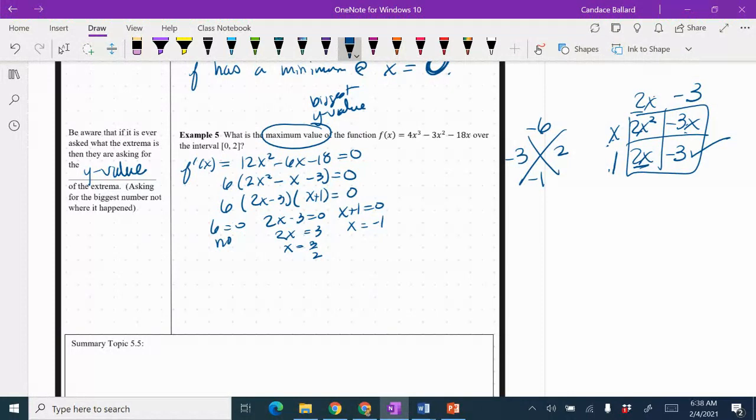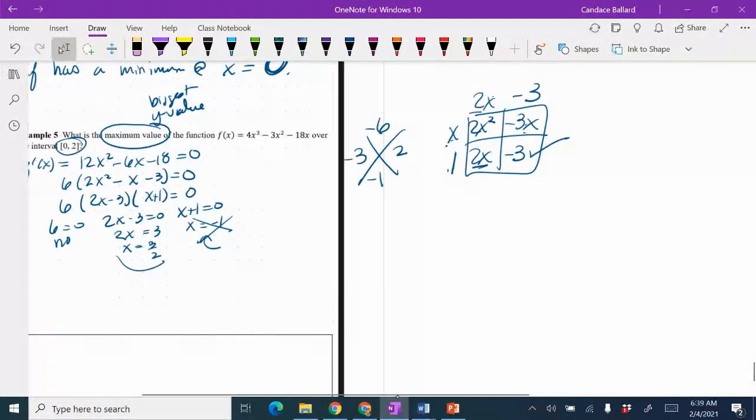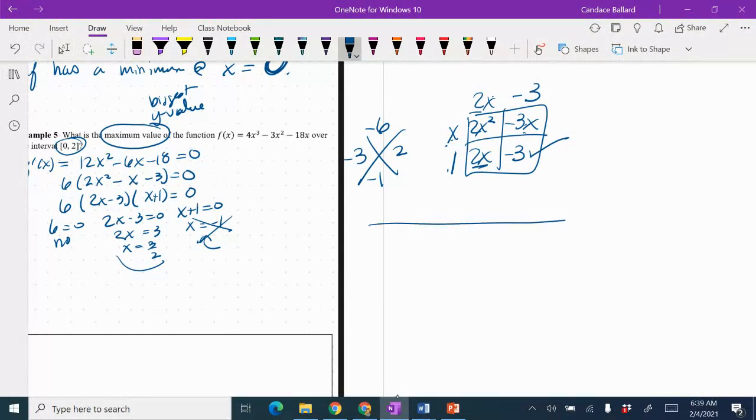So I know my candidates are going to be the 0 and the 2. And check this out. This one is not in between 0 and 2, so I don't have to use it. And so my only other candidate is 3 halves. I know I wrote a little too big, so I'm going to do my table over here to the right. So I'm going to pick my x values, which are 0, 3 halves, and 2.